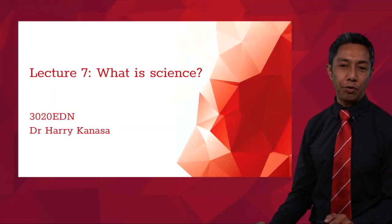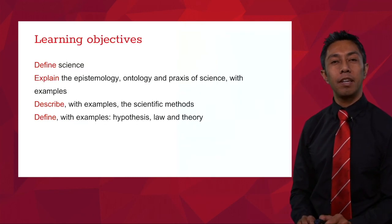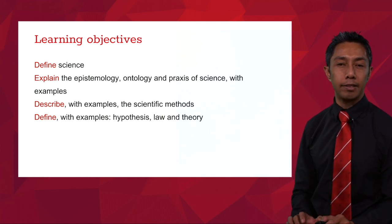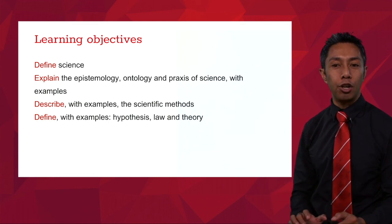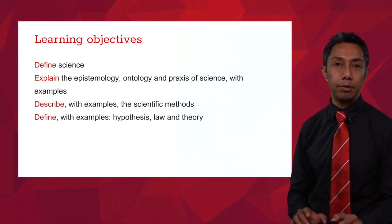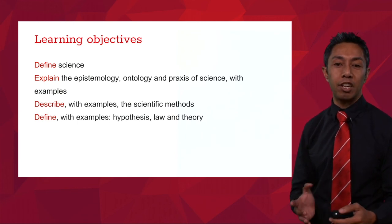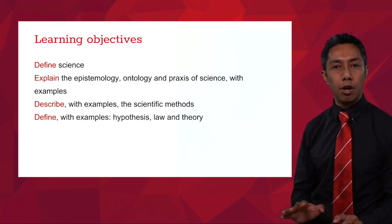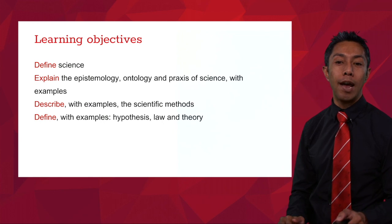Hi, welcome to lecture 7 of 3020EDN. The topic of today's lecture is defining what is science. The learning objectives for today are to define science, but more specifically to explain the epistemology, ontology and practices of science with examples. We should be able to describe with examples the various scientific methods and also define with examples key terms — hypothesis, law and theory.